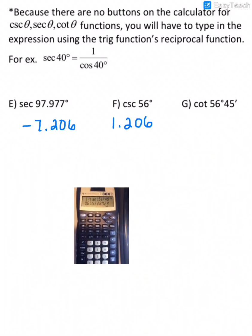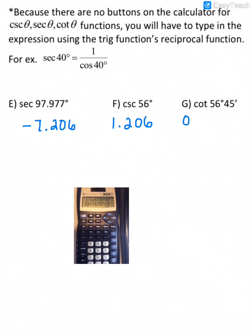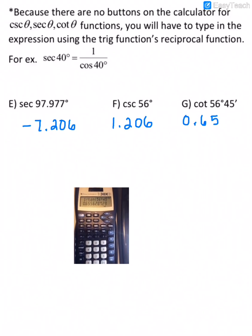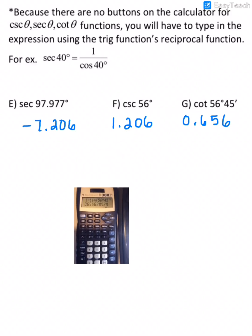And close my parenthesis, okay, and then I get 0.6, it's 6556, so that would round up to 656.